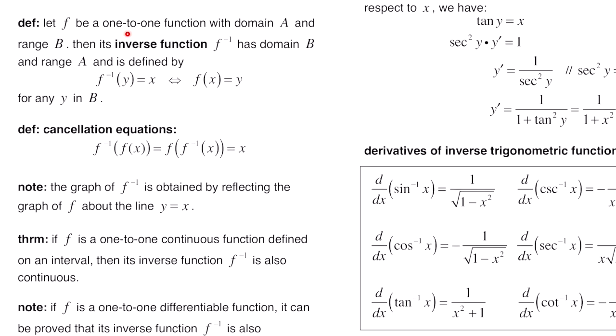For our next definition, let f be a one-to-one function with domain A and range B. Then its inverse function, written as f to the negative one or f inverse, has domain B and range A. It's defined by: f inverse of y equals x, or equivalently f of x equals y, for any y in B. So for a function f, its domain is A and range is B, but for an inverse function, the domain is B and range is A — domain and range flip. Also, when you have inverses of each other, you have the cancellation equations: f inverse of f of x equals x, and f of f inverse of x equals x. When you take the composition of two functions that are inverses of each other, you get just x.